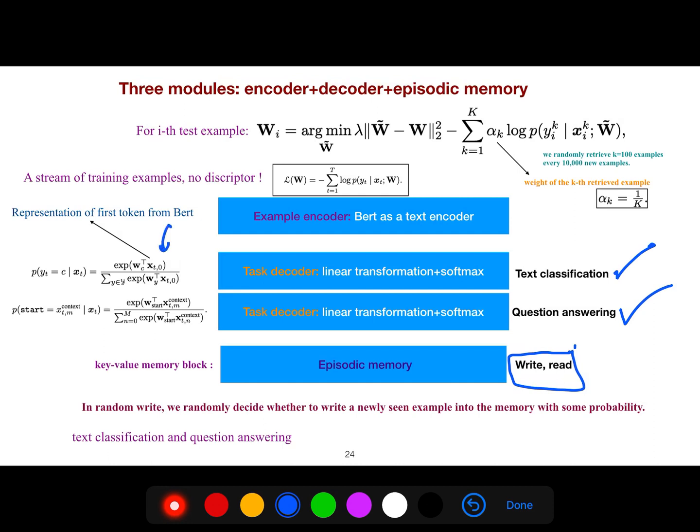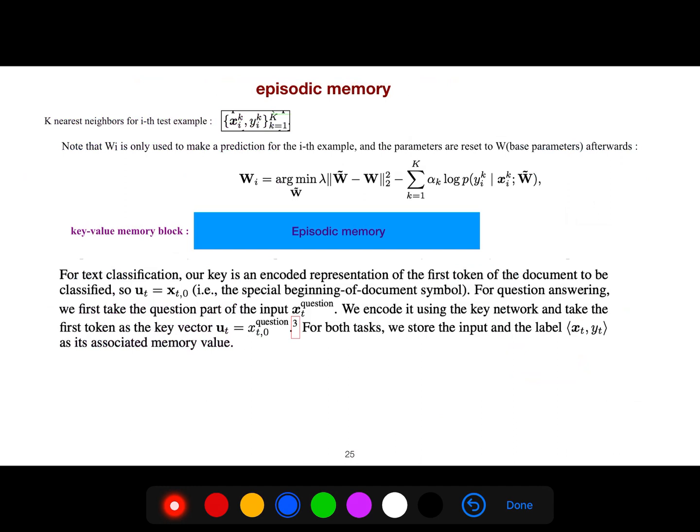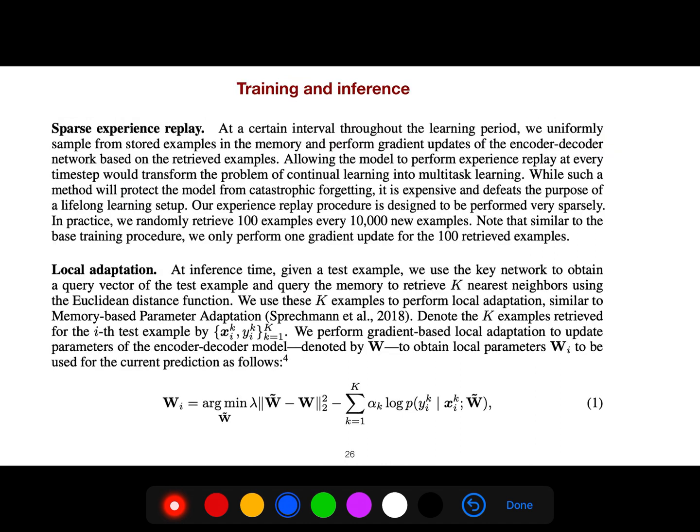And for this one, we use BERT. And W_i is only used to make a prediction. So all of this is just for inference. And the parameters are reset to W, so this is a base parameter afterwards. And in training and inference, you could use this local adaptation.